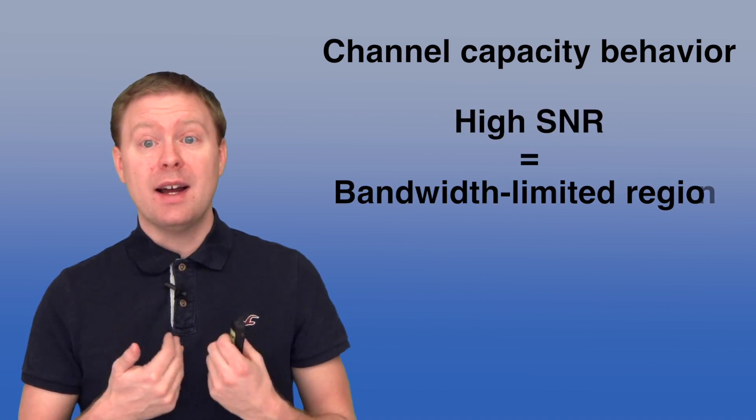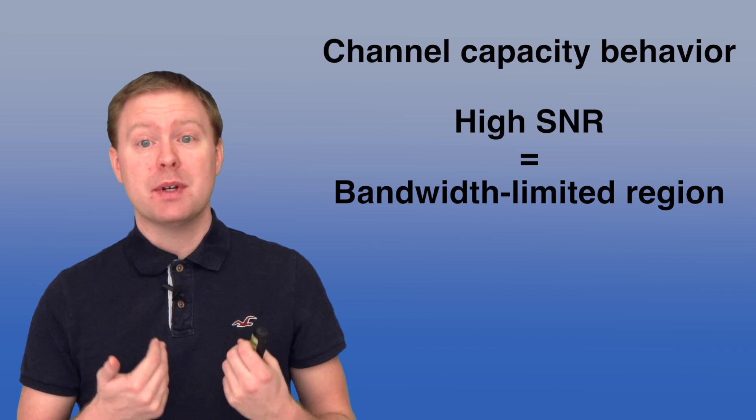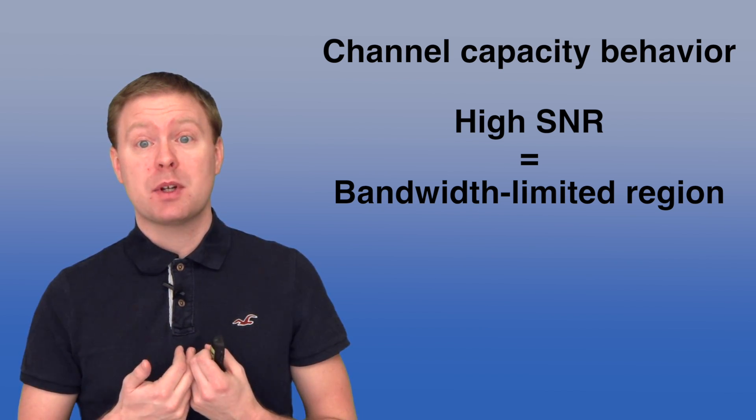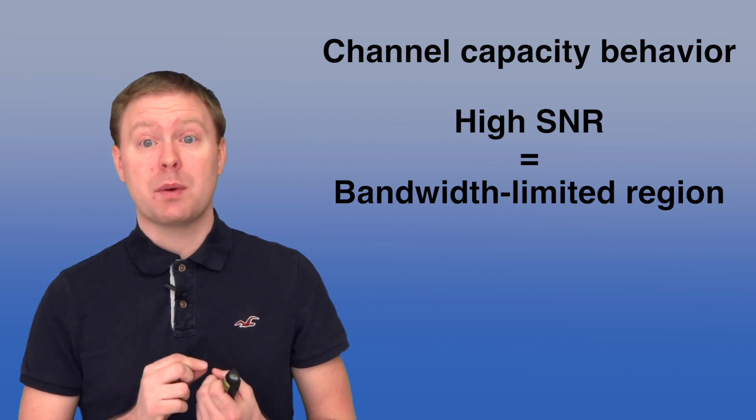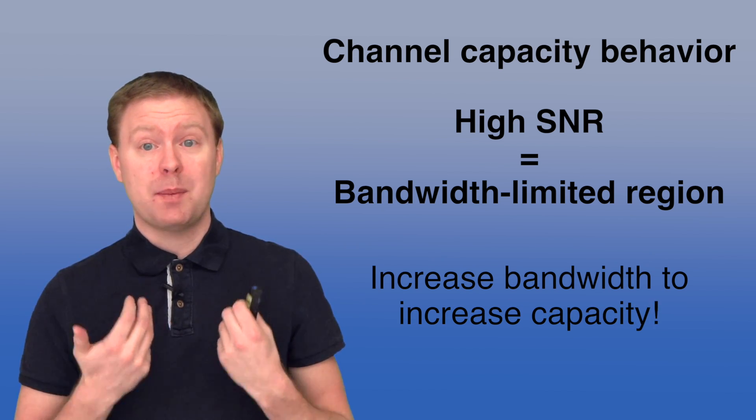If we are instead at high SNR, we have a lack of bandwidth. We are in the bandwidth limited region, and we see that because the capacity grows almost linearly when we increase the bandwidth. So that is what we should try to get in order to improve the capacity. In the next video, we will also look at ways of changing the SNR by using multiple antennas in our system.